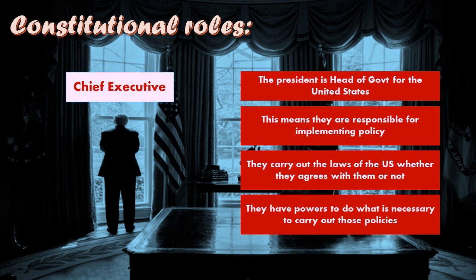Next is the title we most associate with the president: chief executive. This means the president holds all executive power as outlined in the Constitution. Executive means to enforce or carry out the law, so the president's job is to implement policy. The Constitution requires them to faithfully execute the laws, whether or not they agree with them. The president also has elastic powers — the ability to do what is necessary to turn these policies into actual action, stemming from the vesting clause and the faithful execution clause.